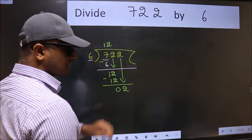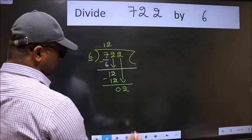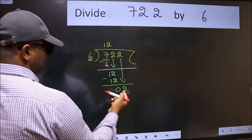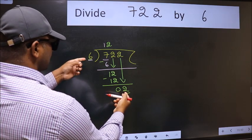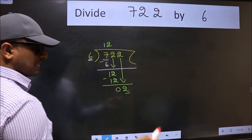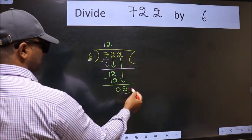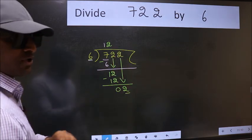And the mistake is this. Here we have 2 and here 6. 2 is smaller than 6. So what many do is, they directly put dot, take 0. Which is wrong.